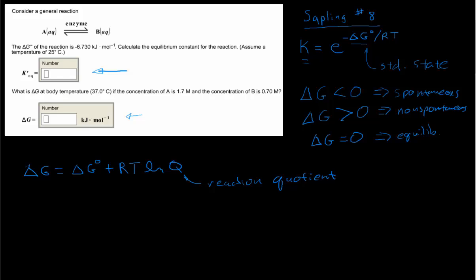So we're going to apply this equation to calculate the answer for delta G for the bottom question. In order to do that, we need to do delta G0. We were given that as part of our reaction. It's up here. So delta G0 is negative 6.730.